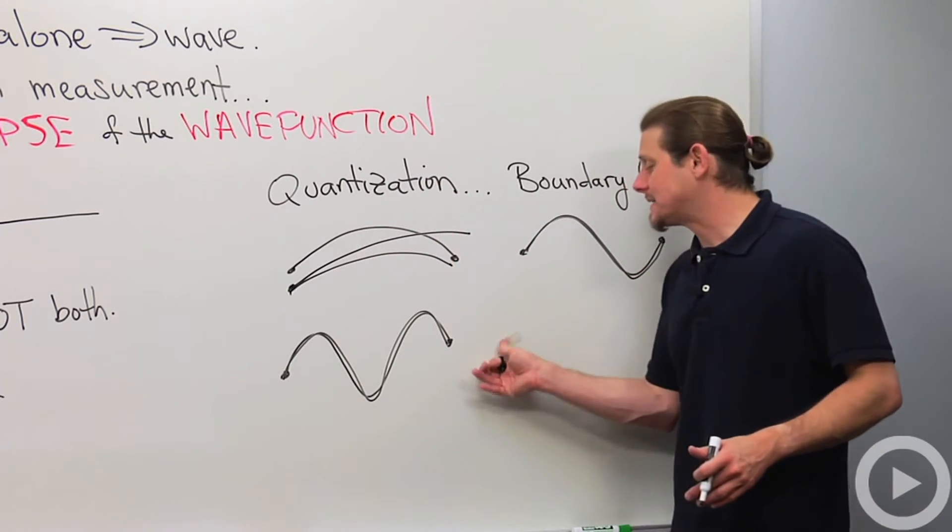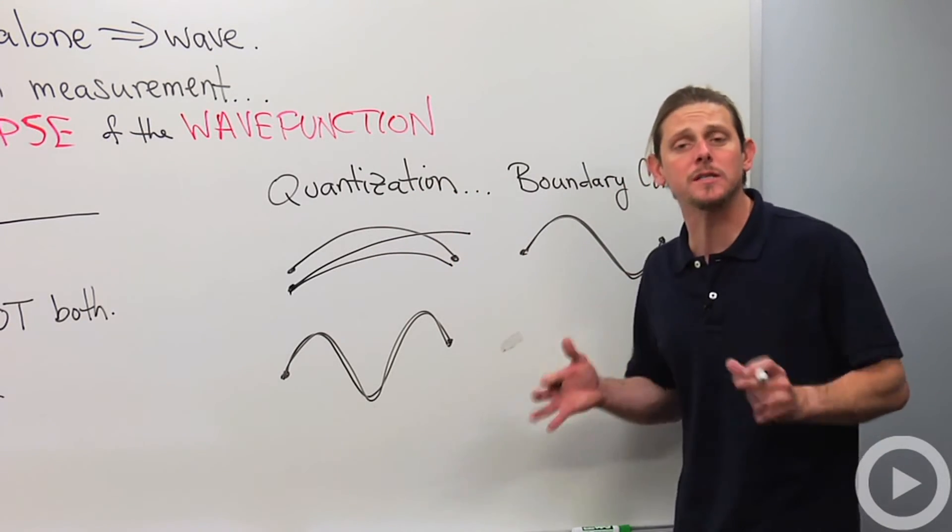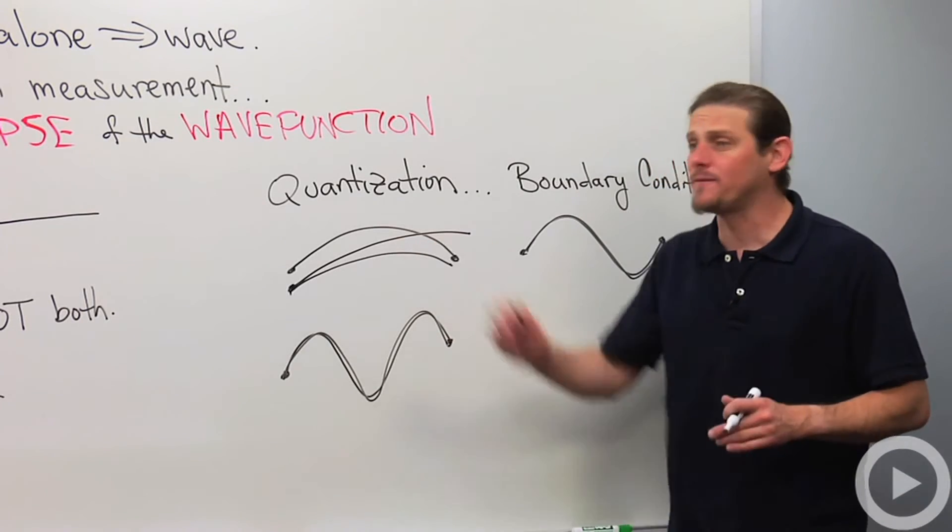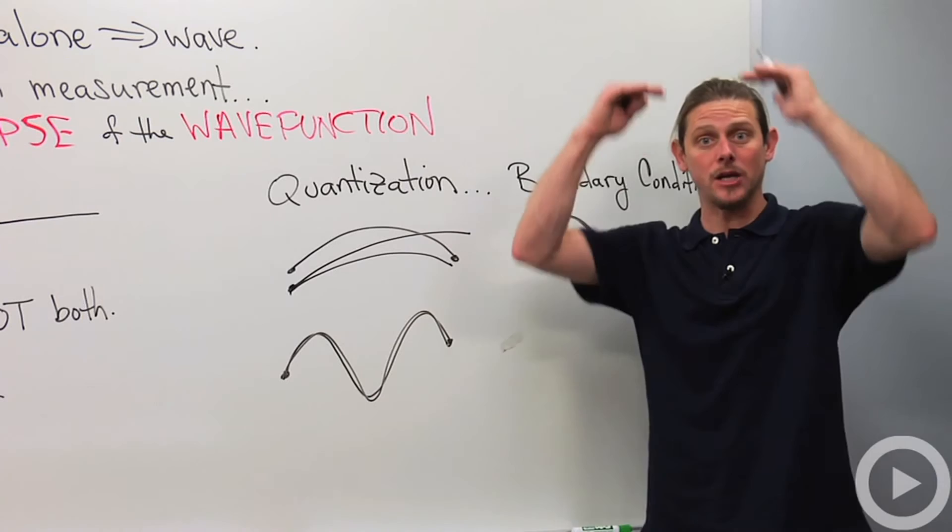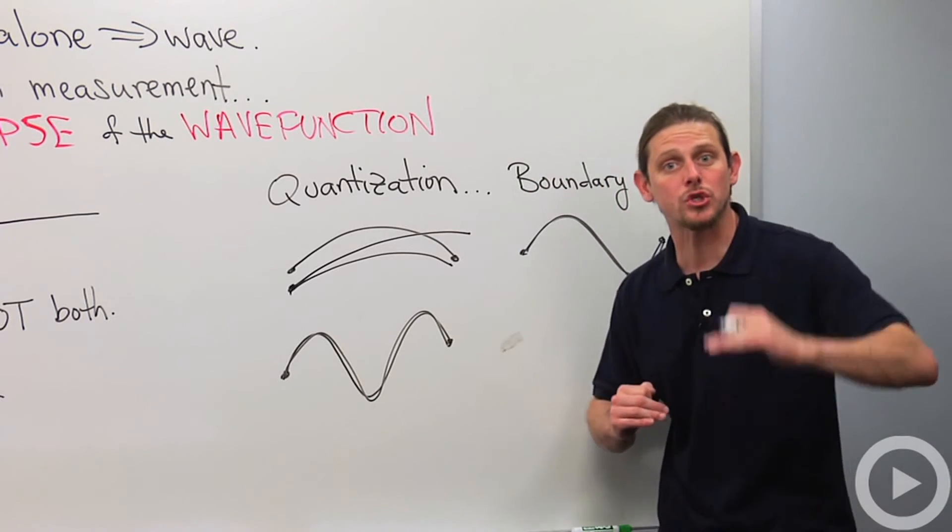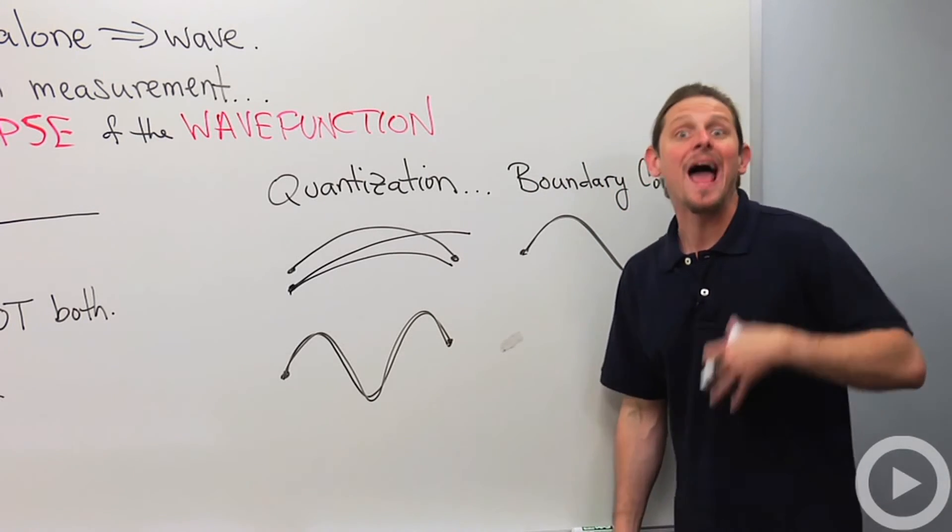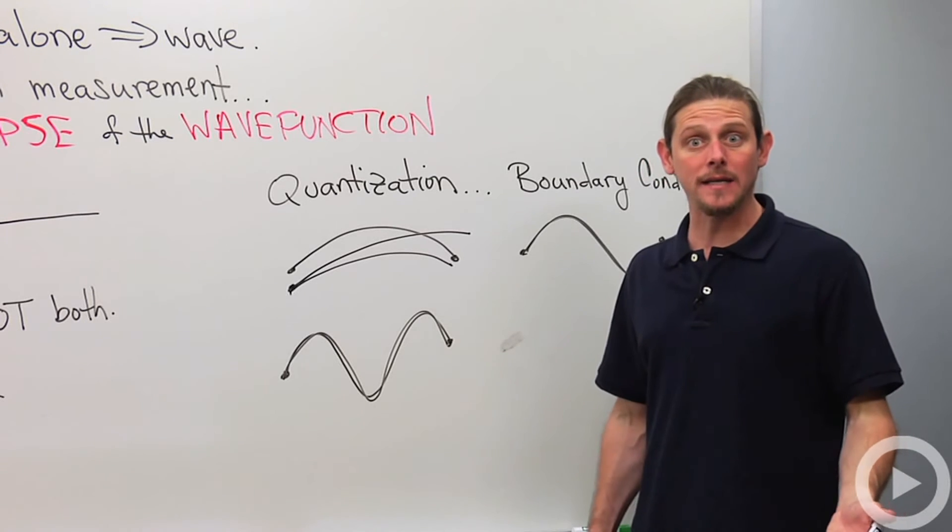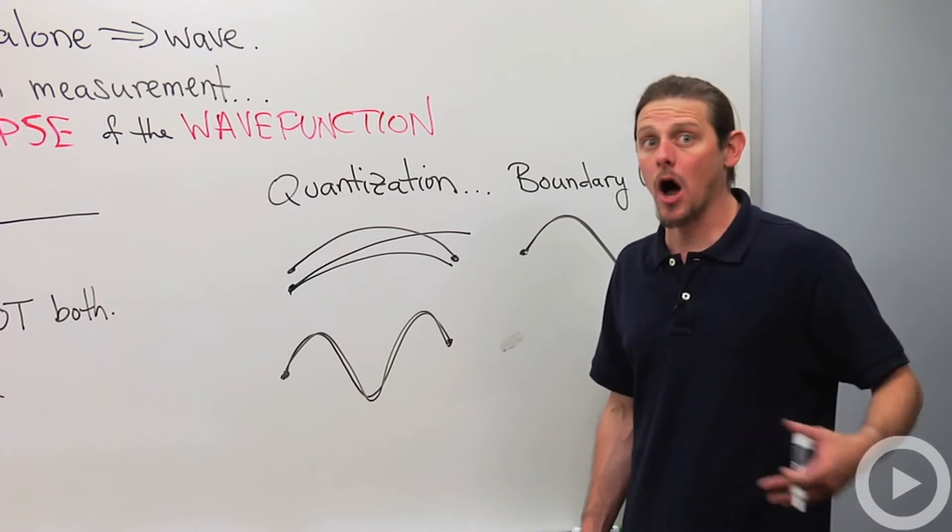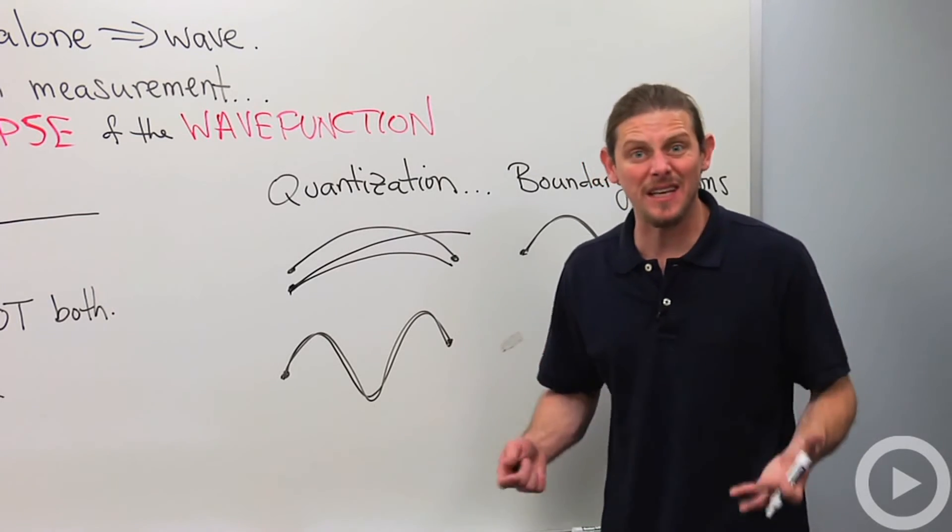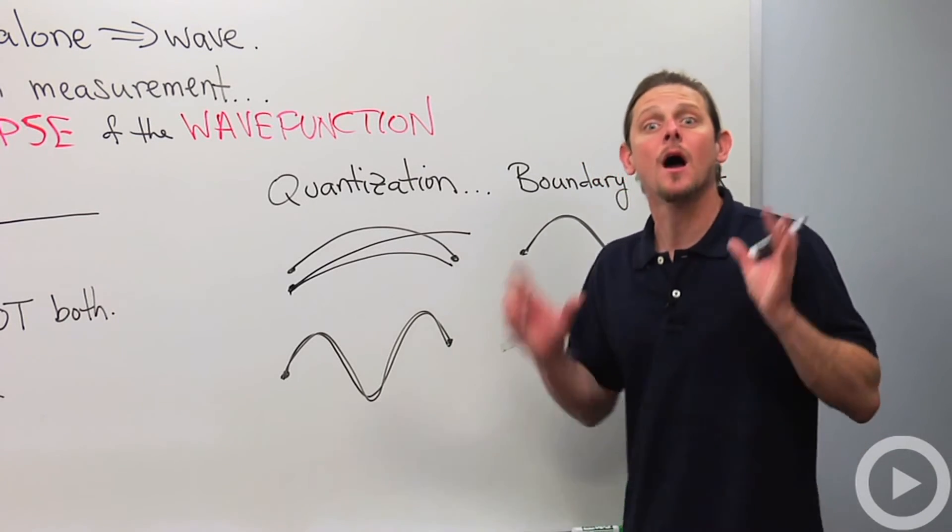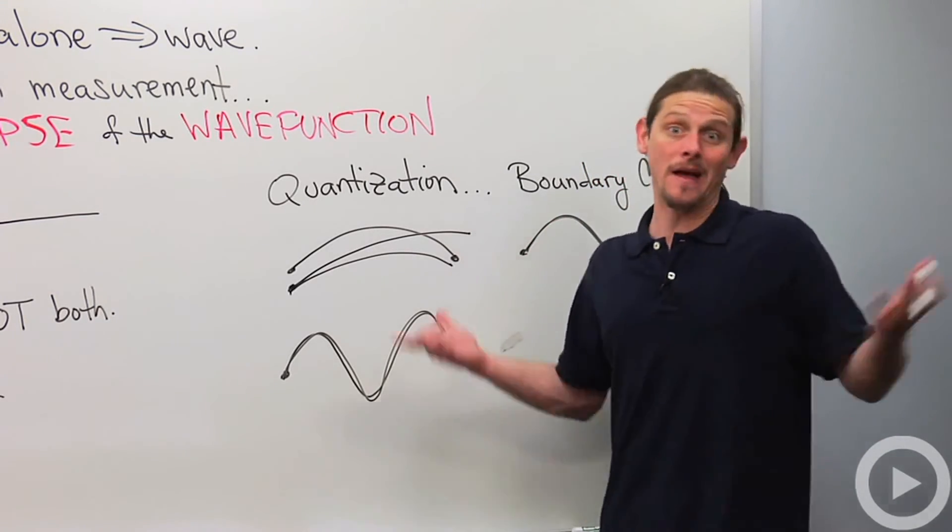So this is what leads to quantization when I impose these boundary conditions on the wave function. And when I do that, I get energy quantization so that I can only have discrete energies. I also get angular momentum quantization. In certain situations, I'll get momentum quantization. And that's what leads to these strange properties of quantum mechanics. And that's quantum physics.